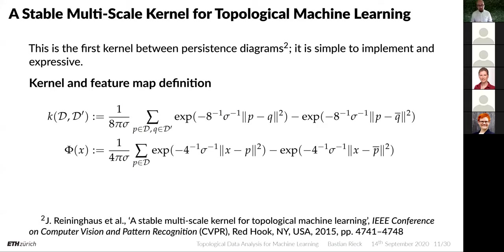In most machine learning applications, you're not really interested in an actual metric between two objects — you're content with knowing that two objects are very similar or very dissimilar. This is where the kernel formulation comes in, because kernels can be evaluated much more efficiently and immediately give rise to neat classification techniques. The first kernel between persistence diagrams is due to Reininghaus and colleagues, presented at CVPR in 2015.